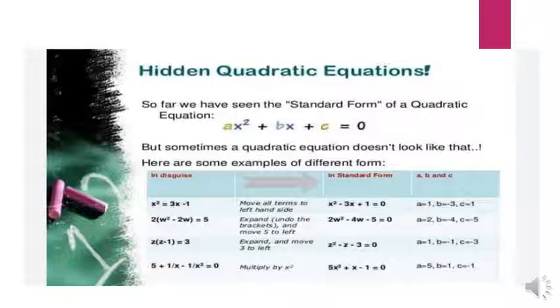In previous examples, the variable was x; here the variable is w. Expanding the brackets and shifting 5 to the left-hand side gives us the standard form. Example 3 uses variable z.